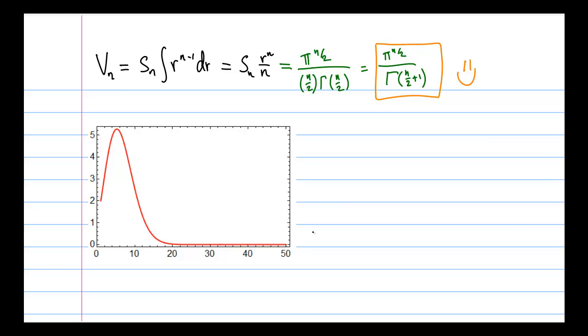And the reason for that is that the volume, as you can see, involves the n over 2 to the power of pi in the numerator, but it has the gamma function in the denominator. And the gamma function increases very rapidly as n grows, because the gamma function is kind of like a factorial.